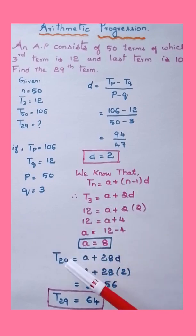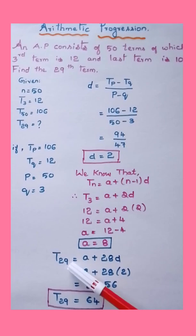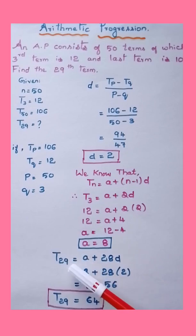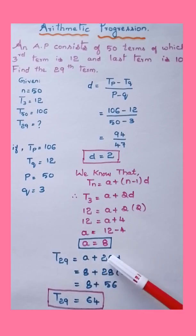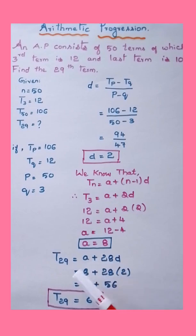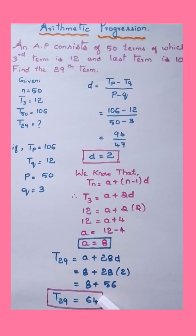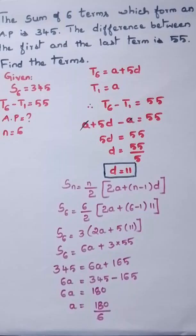Now substituting to find the 29th term: T29 = a + 28d = 8 + 28×2 = 8 + 56 = 64. Therefore the 29th term is 64. Solution cleared.